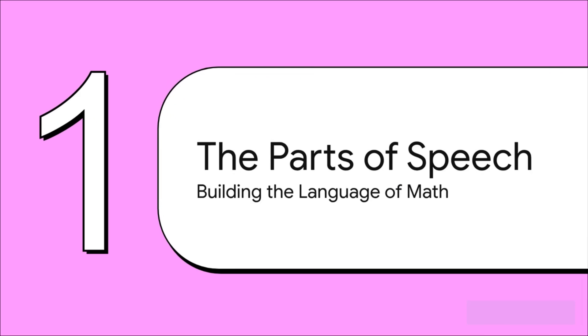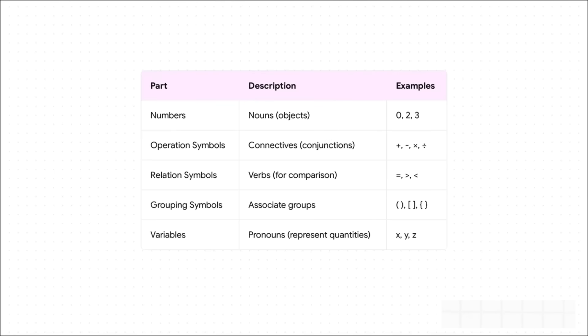So how do we start? Well, just like any language, the language of math is built from some pretty basic parts. You can literally think of them as the parts of speech. Before we can build sentences, we've got to know our words. And what's so cool is how perfectly these math parts map onto English grammar.